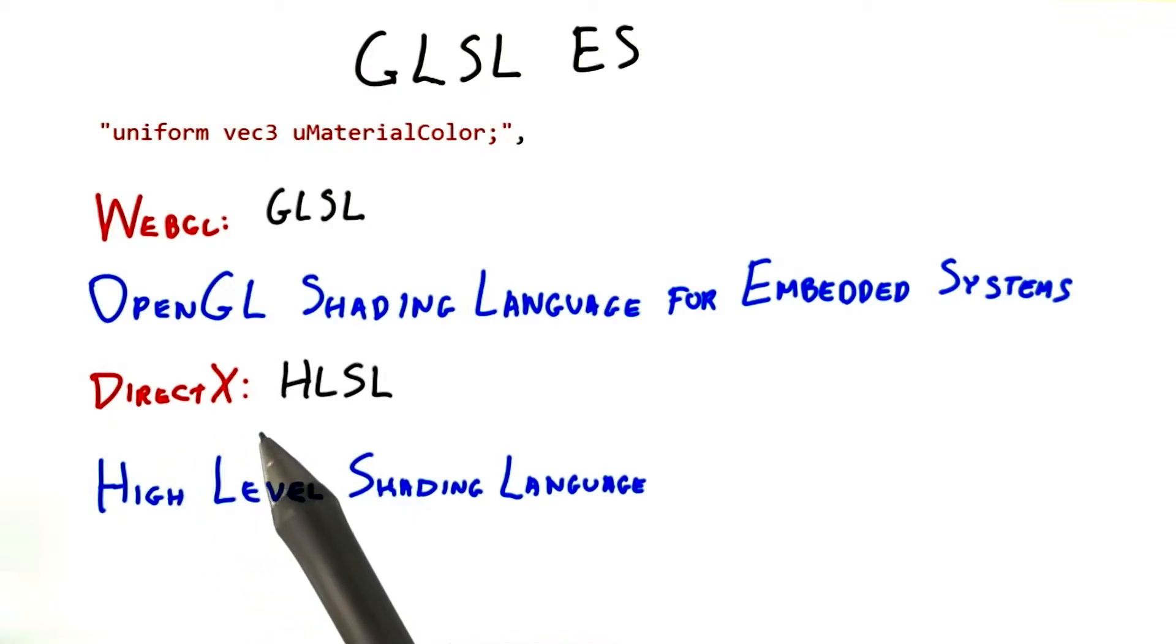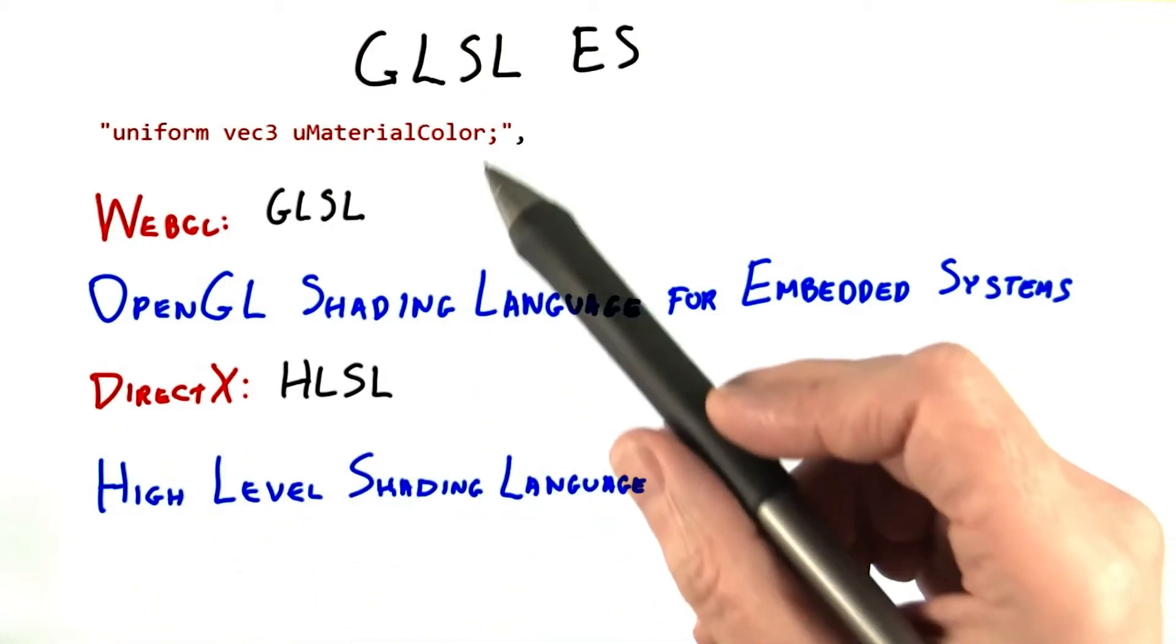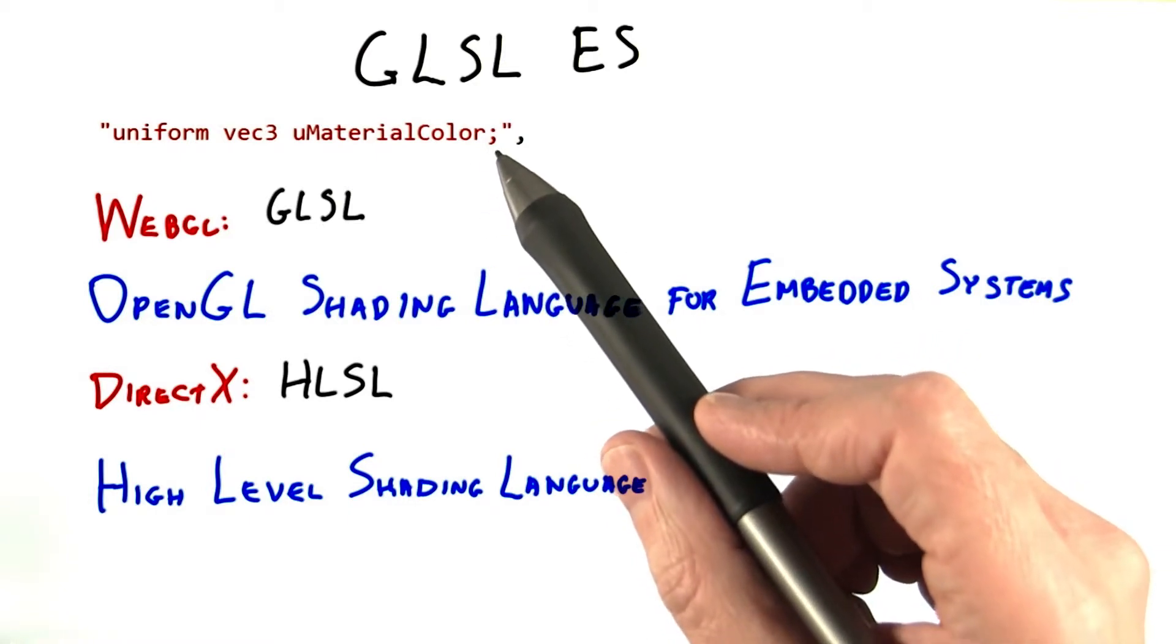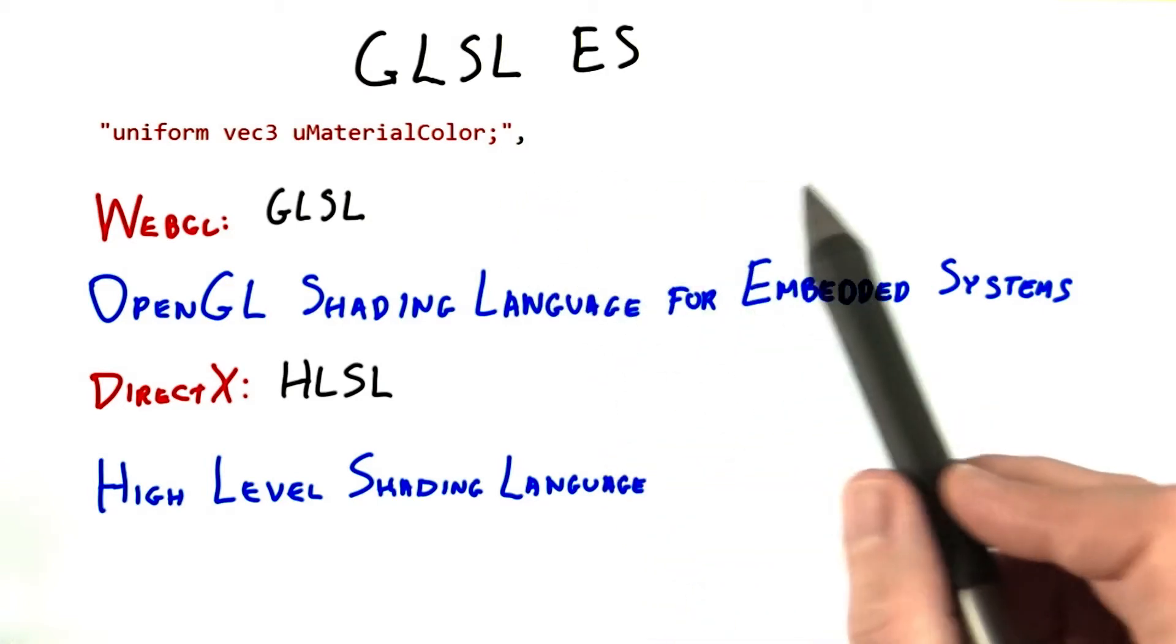If you use DirectX, you'd use HLSL, their high level shading language. In either case, the character string is what gets sent to the graphics driver. The graphics driver compiles these into assembly instructions that are sent to the GPU.